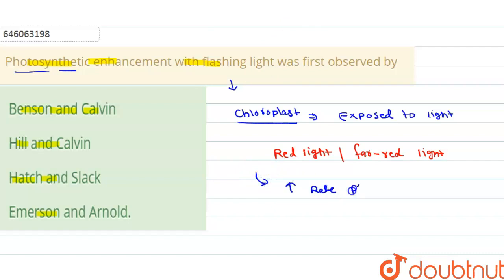This increase in the rate of photosynthesis is called enhancement effect, and this effect was discovered by, or we can say observed by, Emerson, and his co-worker was Arnold.